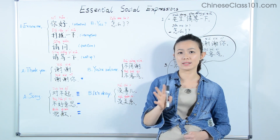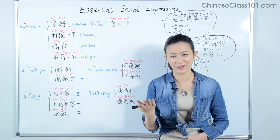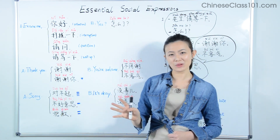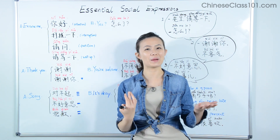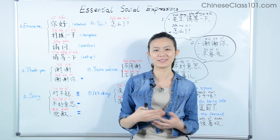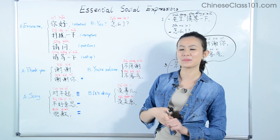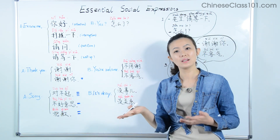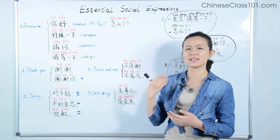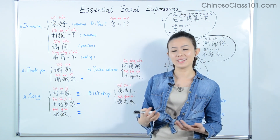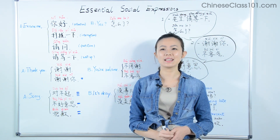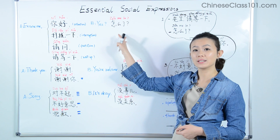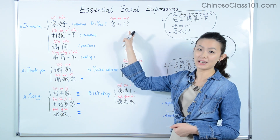In most cases, it's not necessary to respond to these 'excuse me's. But if you feel like responding, or if the other person isn't really saying what they have to say yet, you can keep the conversation going by saying 怎么啦. 怎么啦 literally means 'What happened?' or 'What's the matter?' — it's like saying 'Yes, how can I help you?' It's a pretty common phrase used in both formal and informal situations.